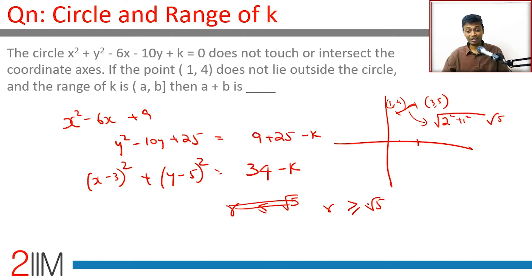Radius is greater than or equal to √5. Brilliant. Radius we know is √(34 - k). √(34 - k) is greater than or equal to √5, or 34 - k is greater than or equal to 5.